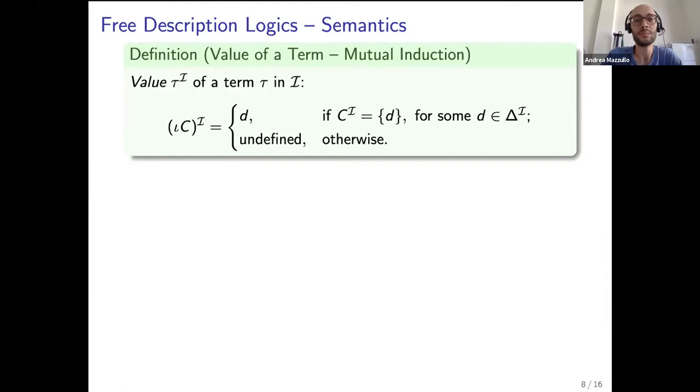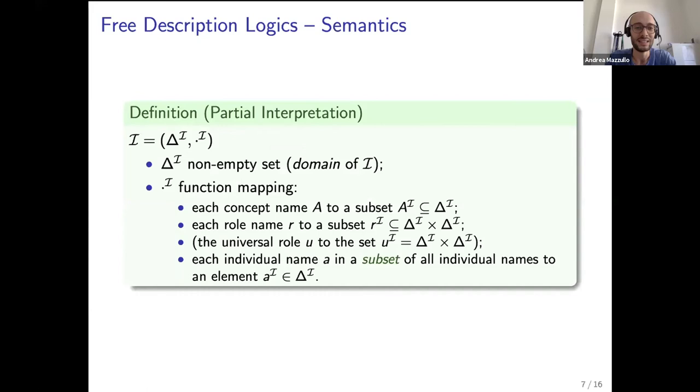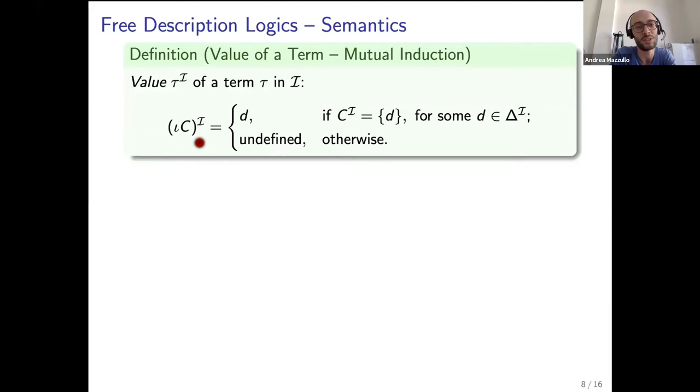From this we can define the value of a term tau in I. For individual names the interpretation function either maps them to elements of the domain or is undefined. For definite descriptions such as iota C, the value of iota C in I is the object D if the extension of the concept C in I is the singleton that contains only D, and it's undefined otherwise.